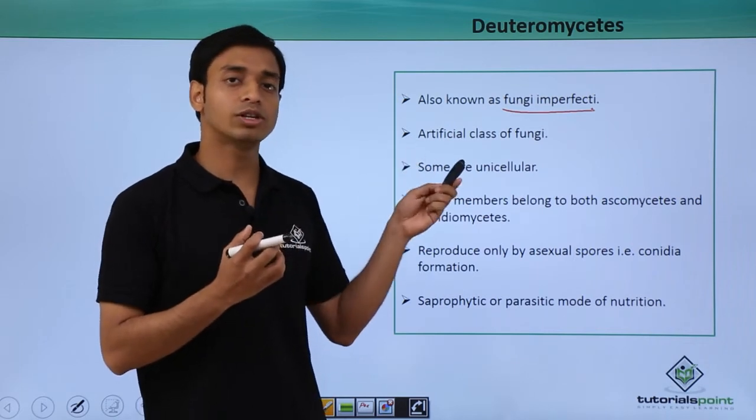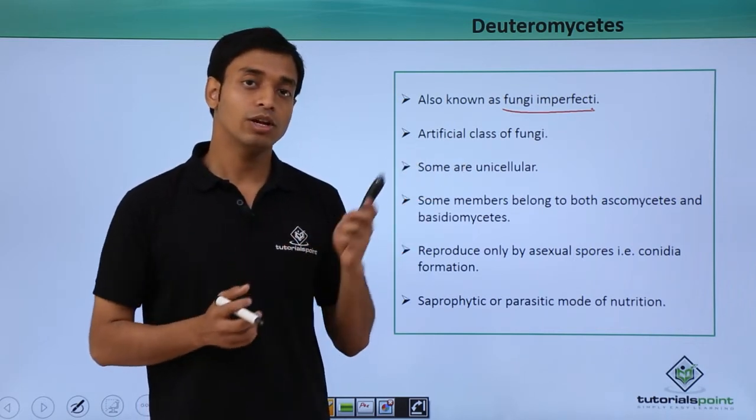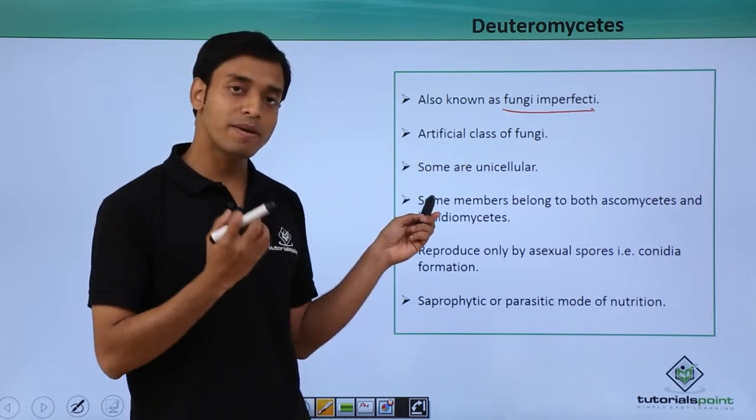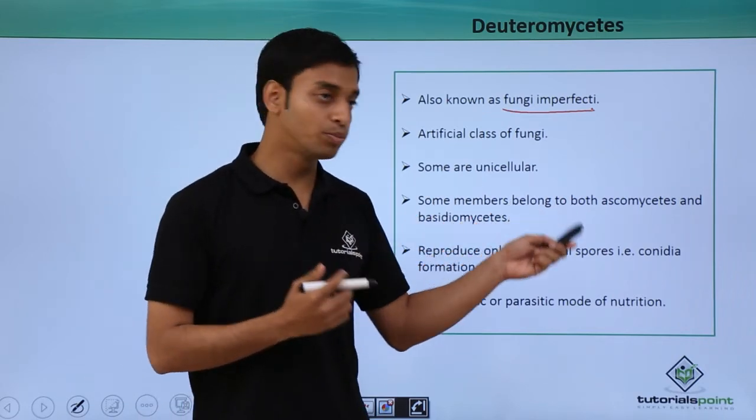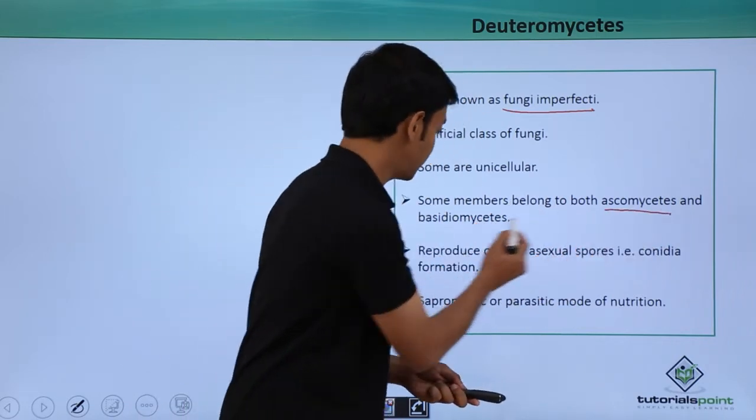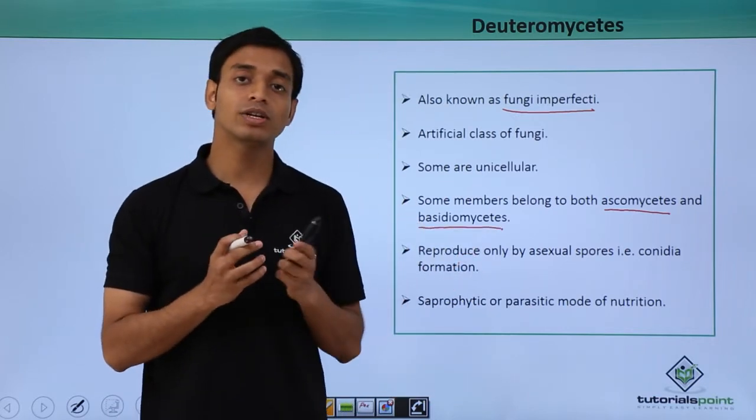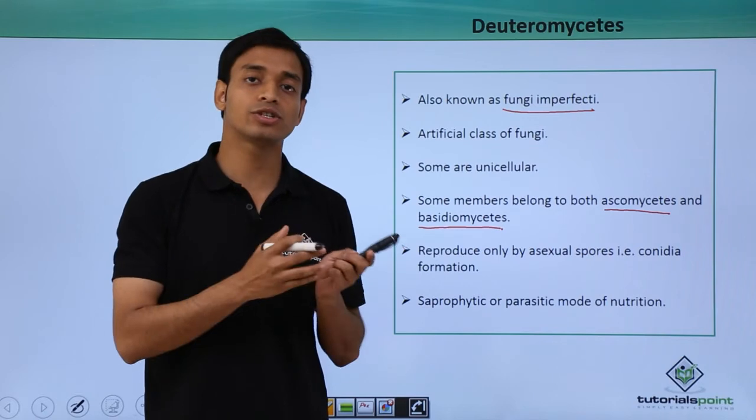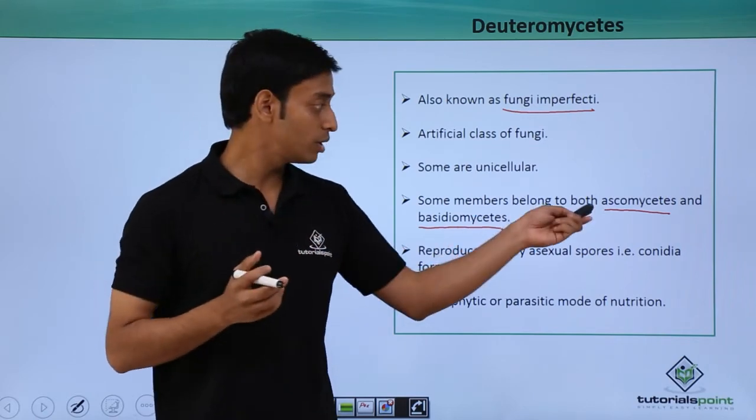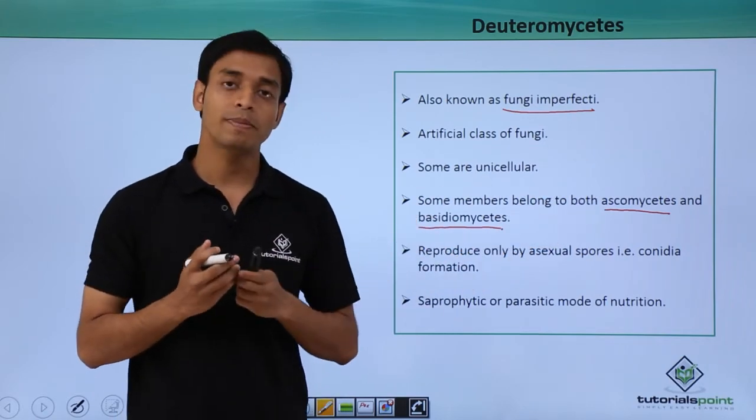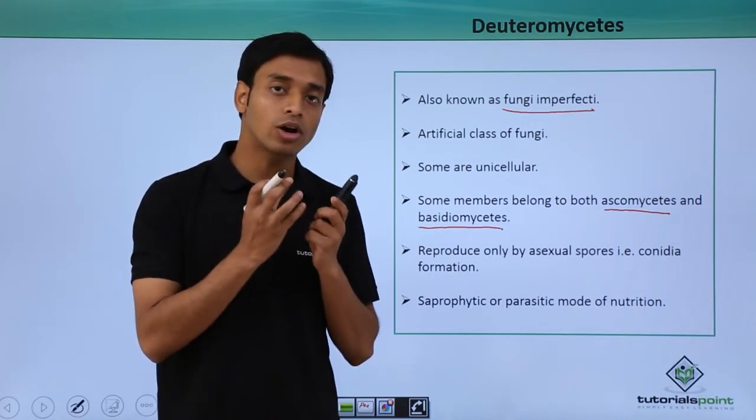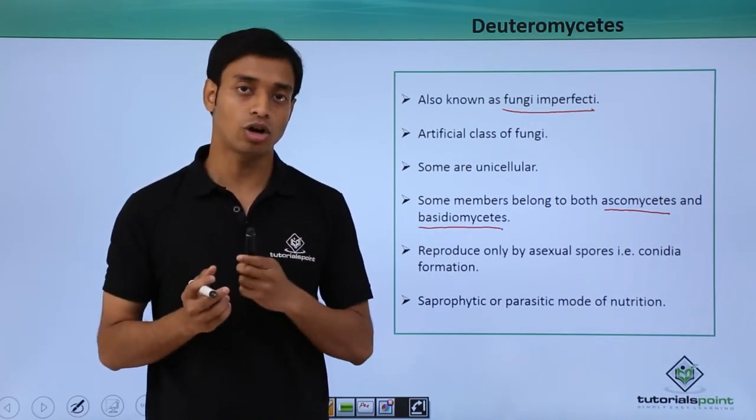Some are unicellular, like yeast. This group includes some members which can belong to both Ascomycetes and Basidiomycetes. That means they have characteristics which can be compared to both groups. They have organisms with common characteristics.